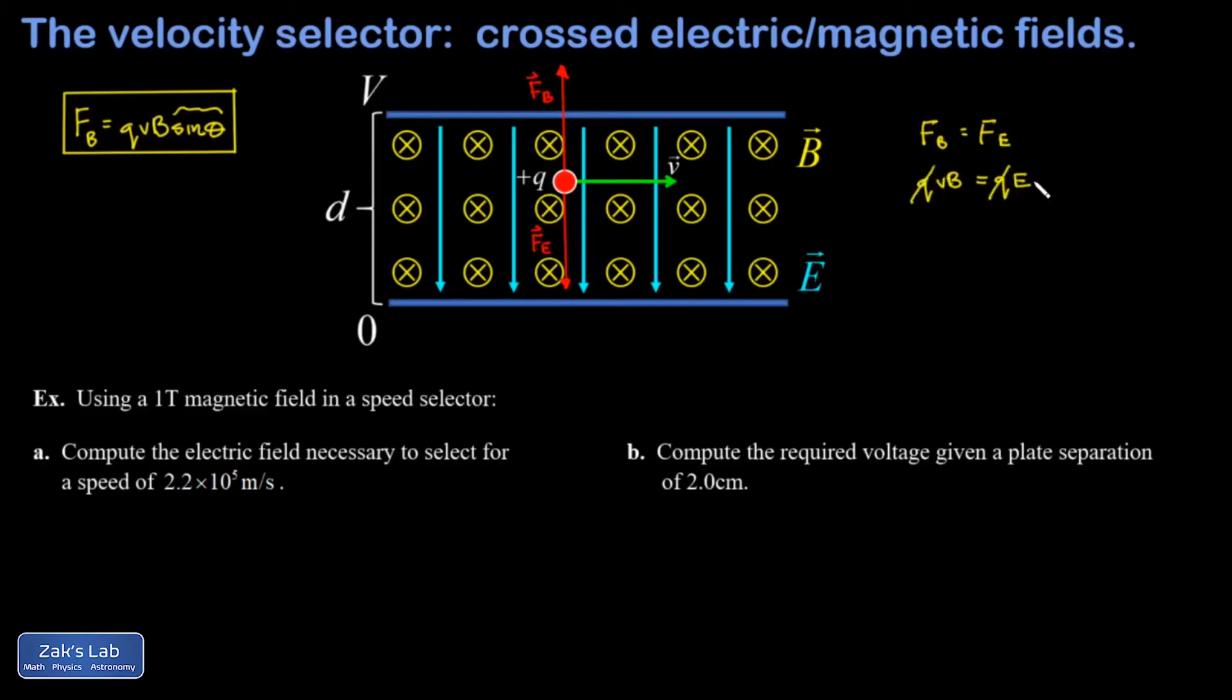And it turns out the magnitude of the charge doesn't matter. And this is great news, because we can send a mixture of positive charges moving at all different speeds through this device. And I'm going to get a stream of positive charges coming out that are all just moving at this one special speed for which the forces balance. All the other charges are going to crash into the plates. And it turns out the magnitude of that speed is E over B.